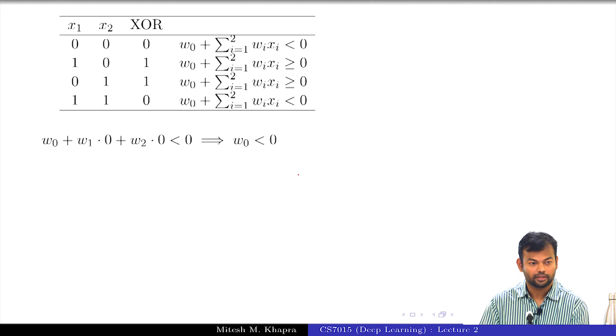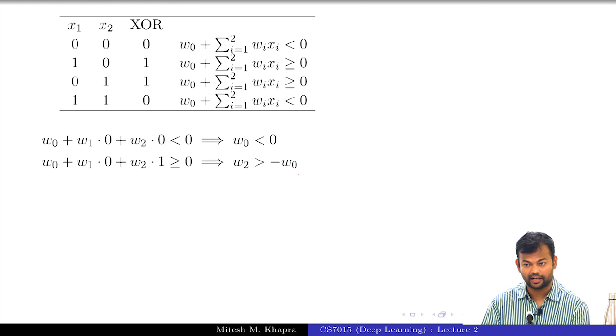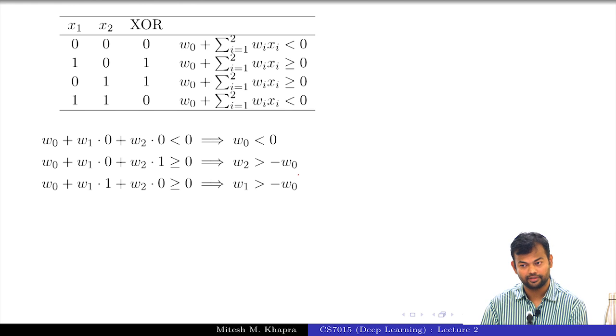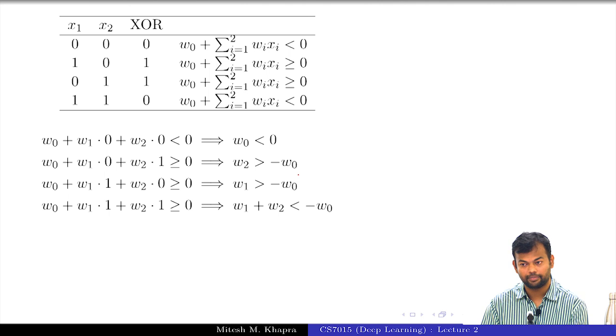Let us see the first condition implies that W naught should be less than 0, second condition implies this, third condition implies this, fourth condition implies this.